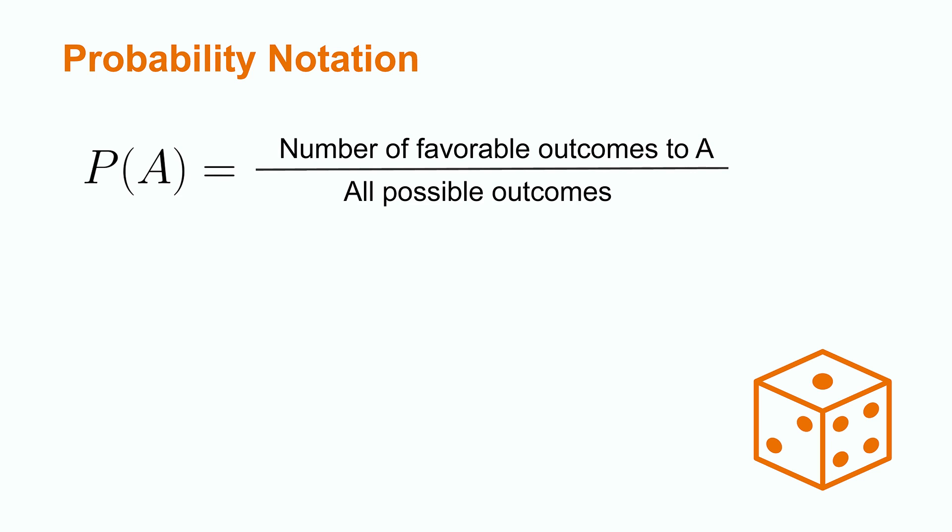However, A can be any variable we would like, not just the letter A. If we wanted to represent the probability of rolling a 3 on a die, we call rolling a 3 event A, we would write it as P of A equals 0.167.